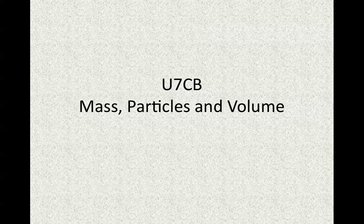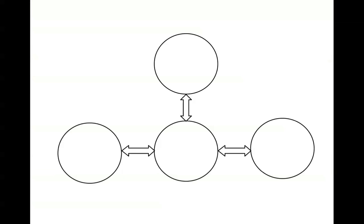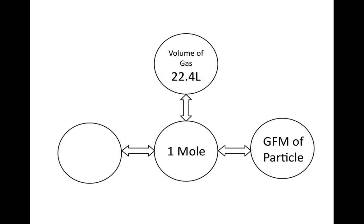In concept 7, we're going to be taking what we started with concept A and adding to it in terms of the number of conversion factors we're going to be using. Yesterday we related everything to the mole. We learned that the GFM of the type of particle we're working with is equal to 1 mole, the volume of a gas at STP is 22.4 liters, and 1 mole of a substance contains 6.02 times 10 to the 23rd particles.